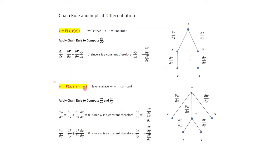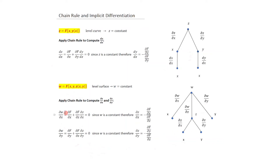This extends to three variables: if W = f(X, Y, Z) with Z a function of X and Y, and W is a level surface (constant), then ∂W/∂X = ∂F/∂X + ∂F/∂Z · ∂Z/∂X = 0, from which we solve for ∂Z/∂X. Similarly, ∂Z/∂Y can be obtained since W is constant and its derivative equals zero.